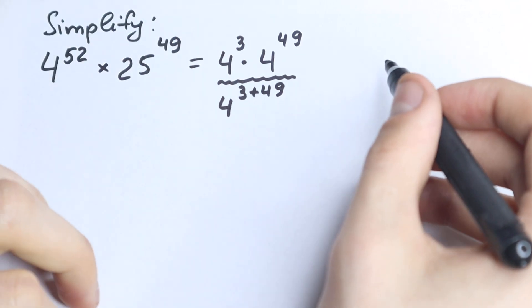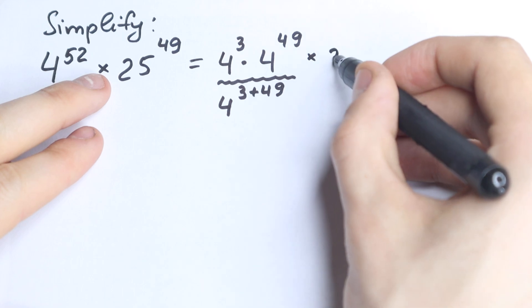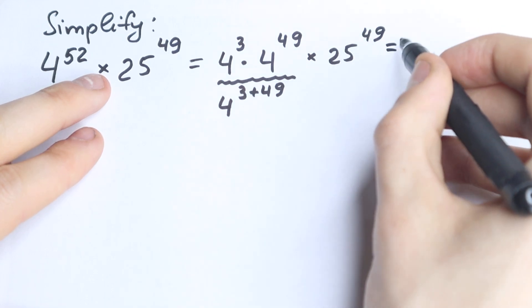So 4 to the power 3, times 4 to the power 49, multiplying by 25 to the power 49. And this is our first step.